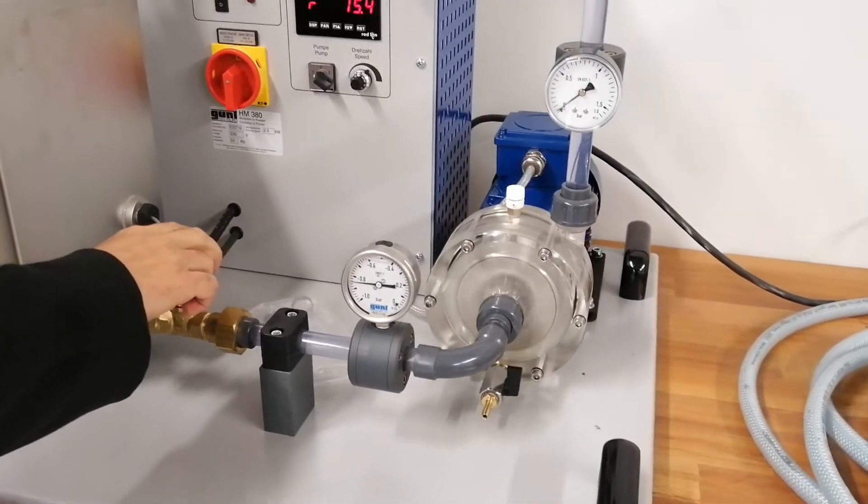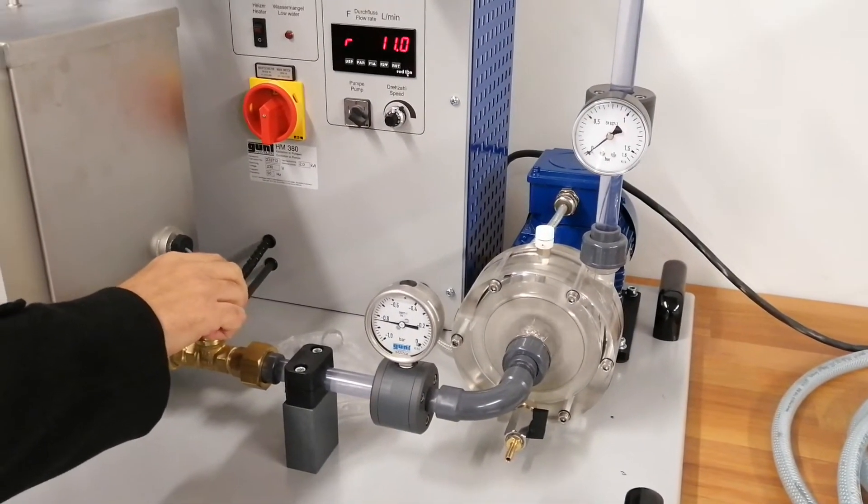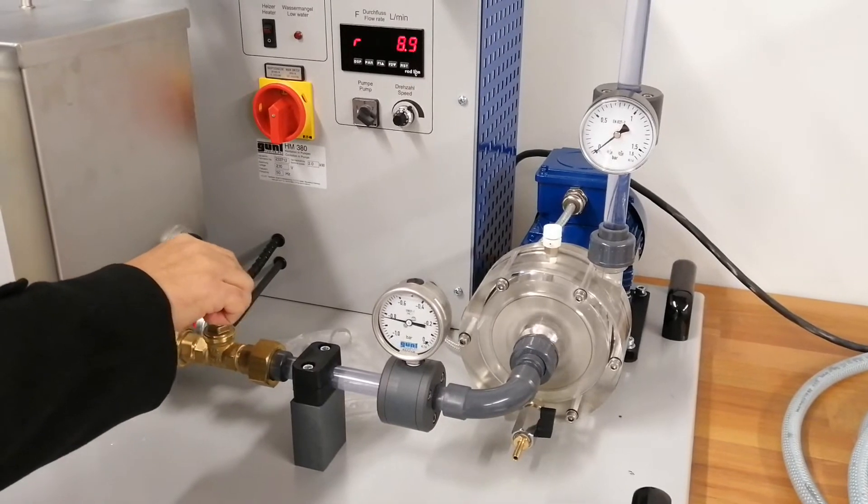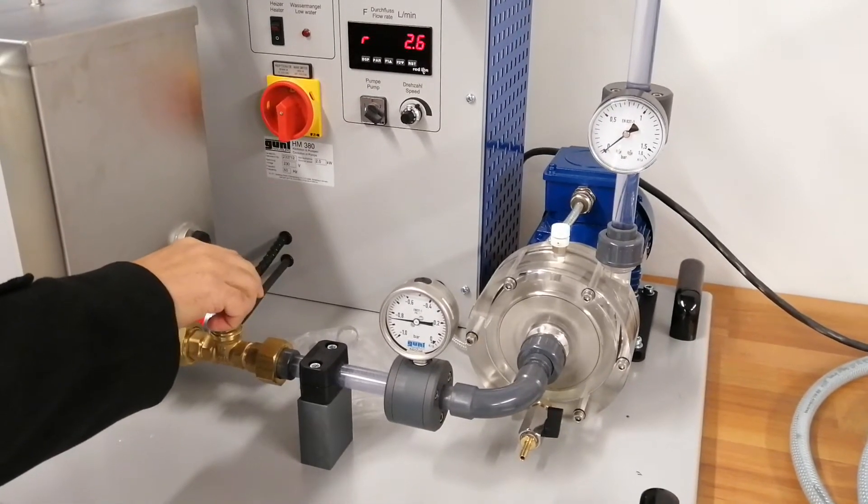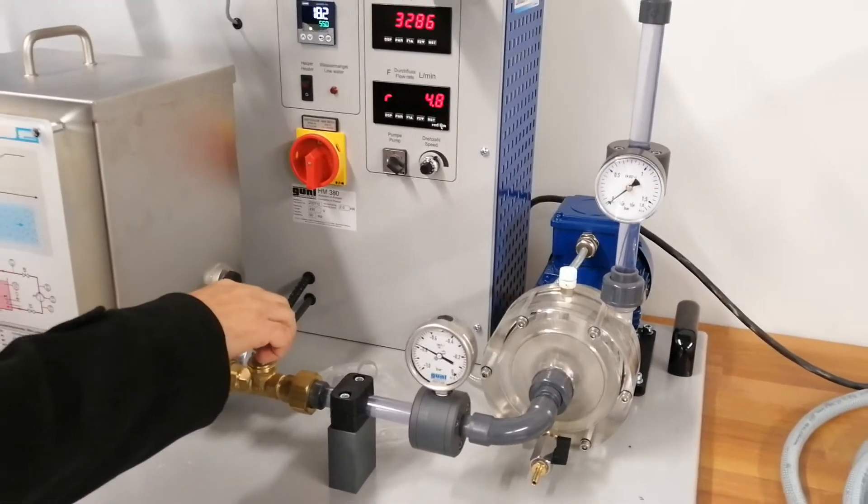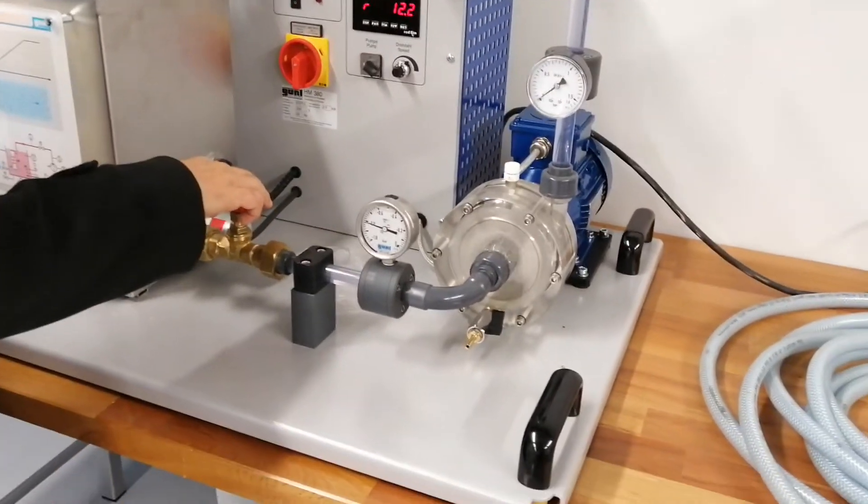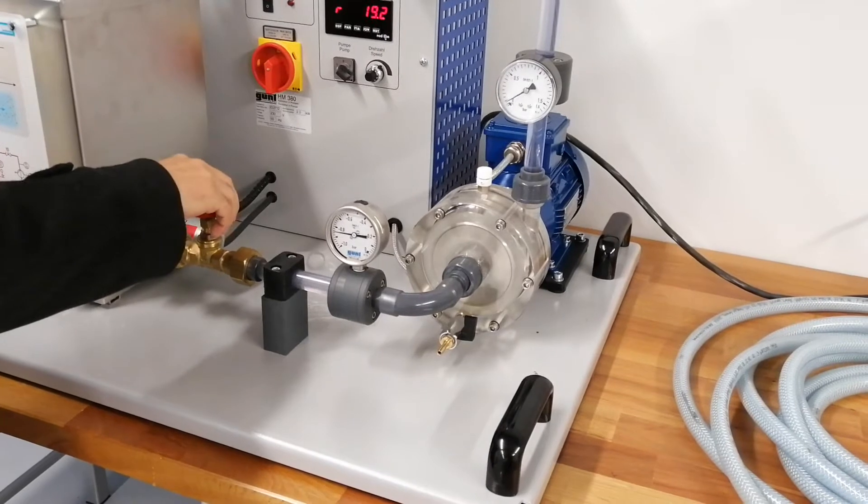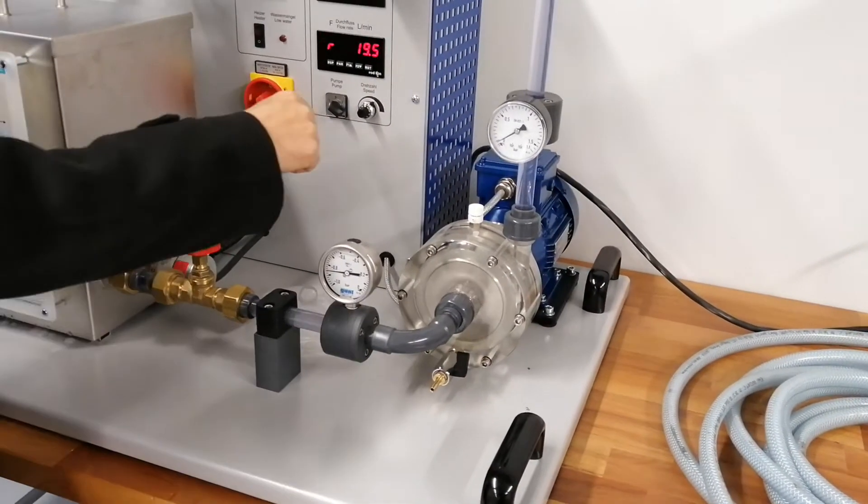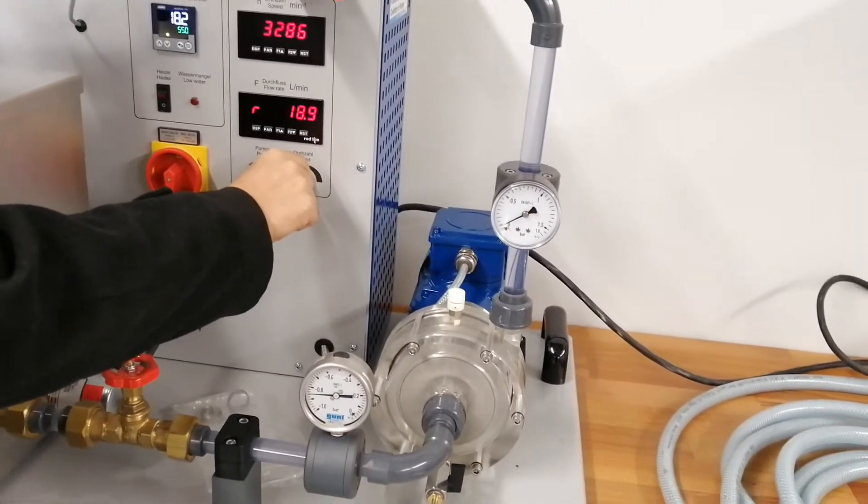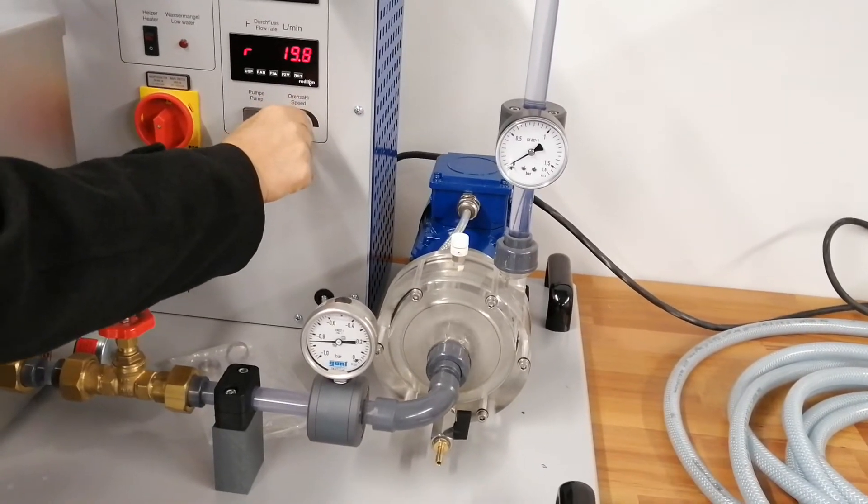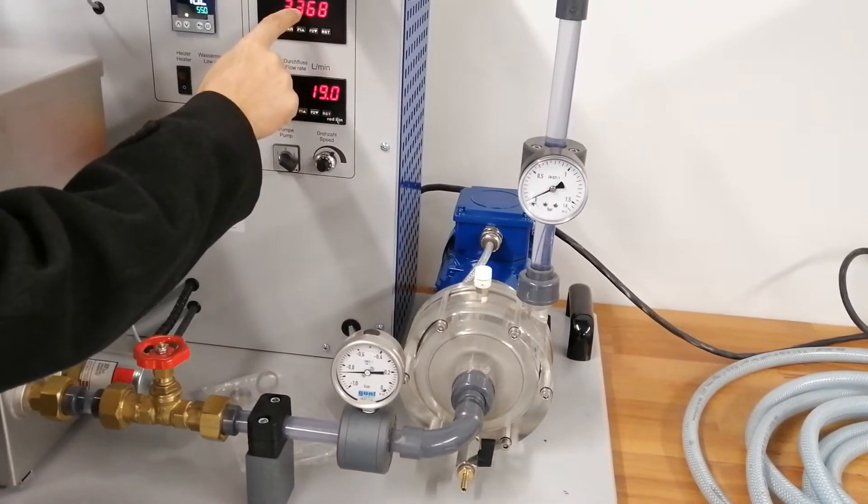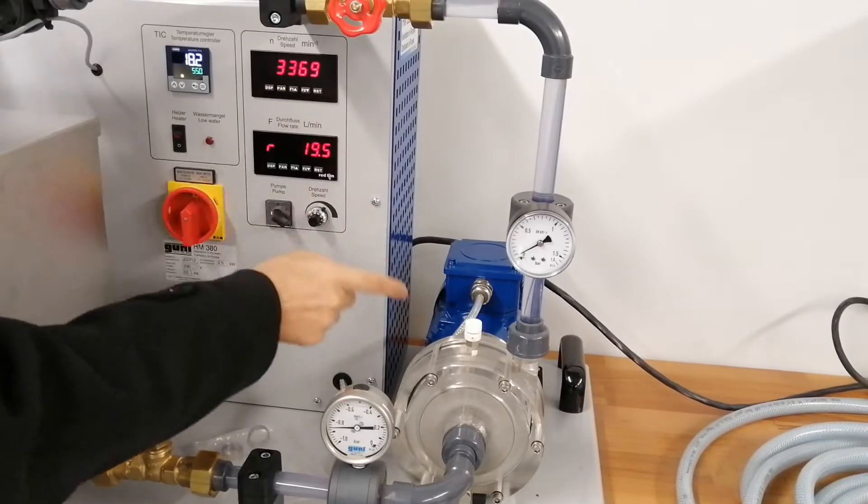So, by changing discharge or velocity amount, you can observe the effect of velocity on cavitation. Also, you can observe the effect of speed on cavitation by increasing the speed of centrifugal pump.